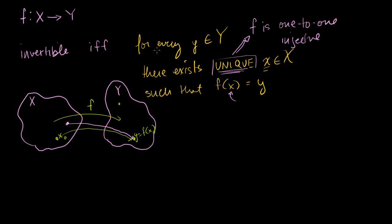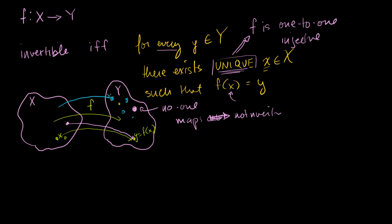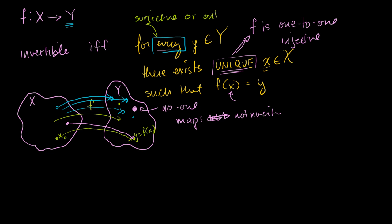The other part of this is that for every y, you can pick any y in the codomain, and there must exist a unique x that maps to it. There cannot be some y that no one maps to — if that's the case, we don't have our conditions for invertibility. So every element of Y has to be mapped to by exactly one element of X. In the last video, that notion is called surjective, or onto.